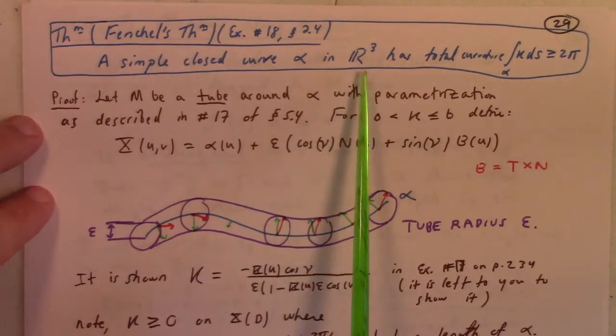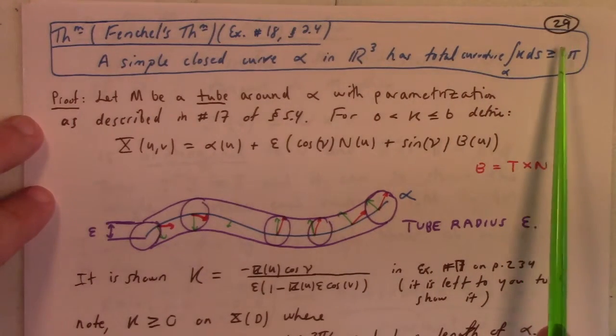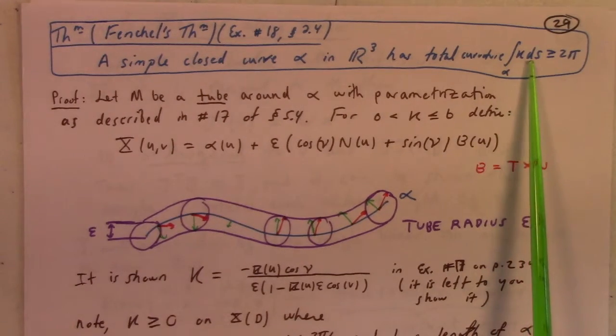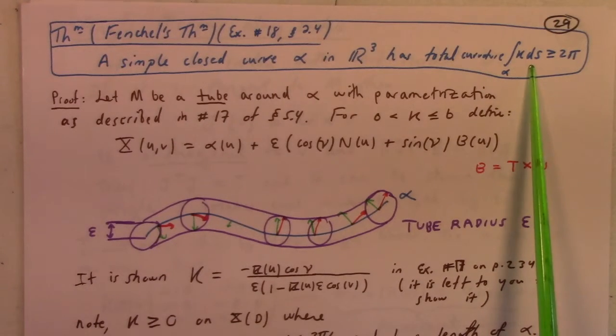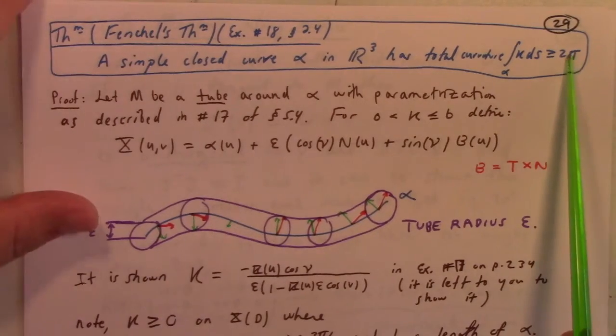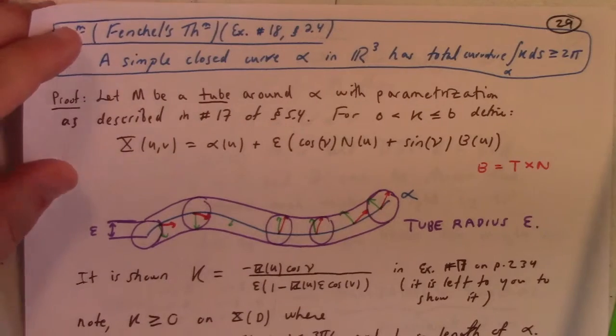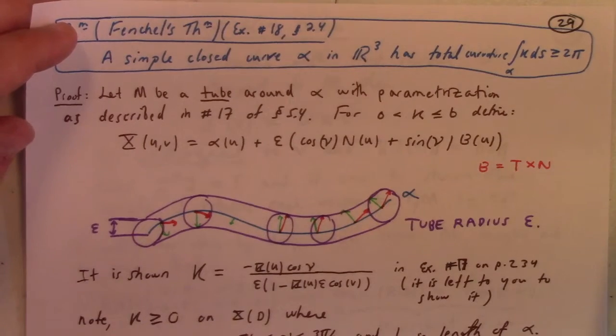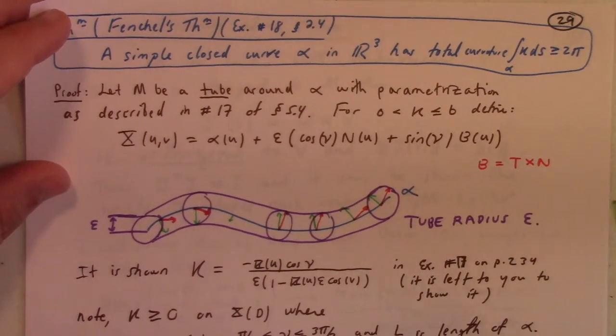A simple closed curve alpha in R³ has total curvature. So the total curvature of a curve you get by integrating the Frenet curvature with respect to arc length, alright? And so this theorem is that that total curvature of a curve has to be greater than or equal to 2π. So, well, and it's a closed curve, alright? A simple closed curve. Of course, for something like a helix that just goes on and on without end, the total curvature would be infinite, I suppose. Or you wouldn't define it, whatever.